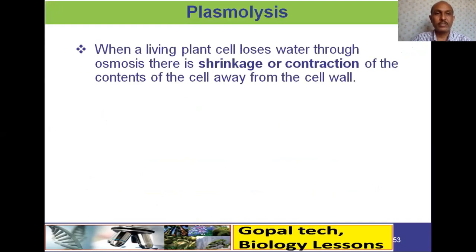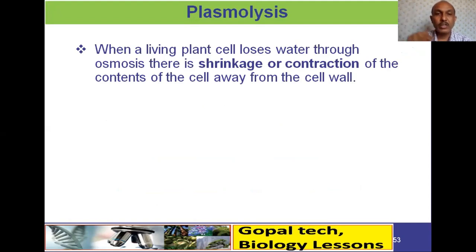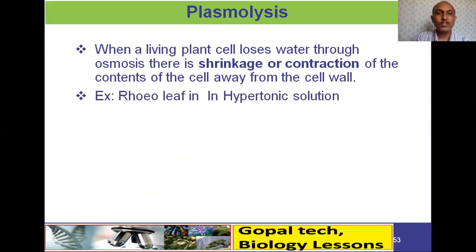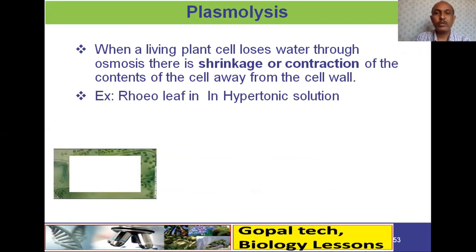Plasmolysis: when a living plant cell loses water through osmosis, there is a shrinkage or contraction of the cell contents away from the cell wall — this is called plasmolysis. For example, take a rhoeo leaf and keep it in a hypertonic solution.